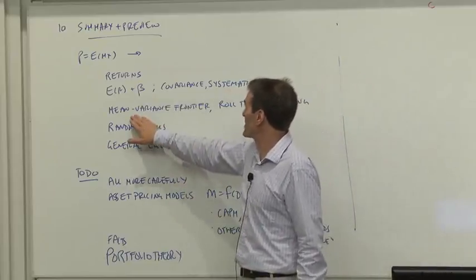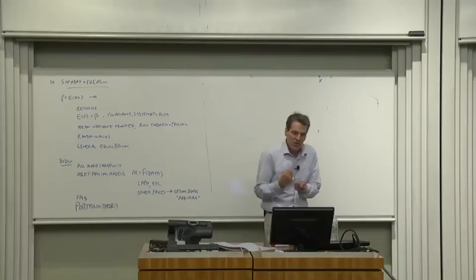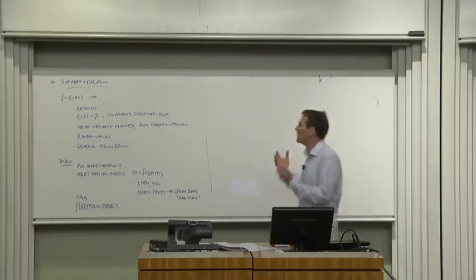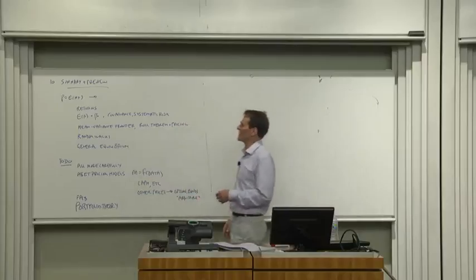We found the mean variance frontier. It exists and is expressed by the Rolle theorem. Returns on the mean variance frontier carry all pricing information even when nobody wants to hold a return on the mean variance frontier.